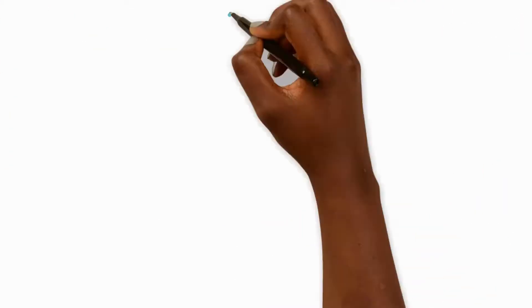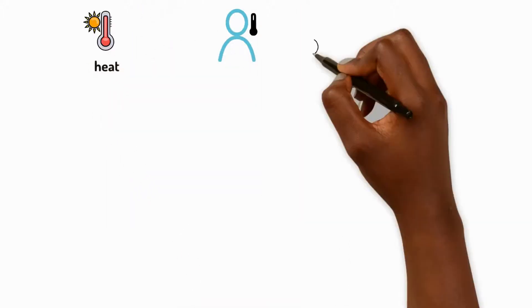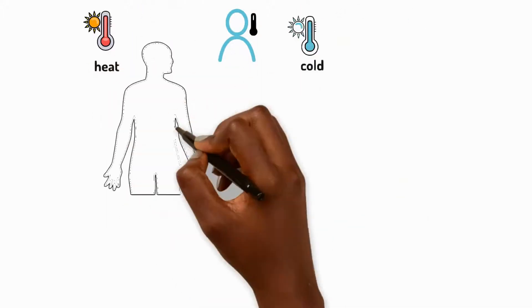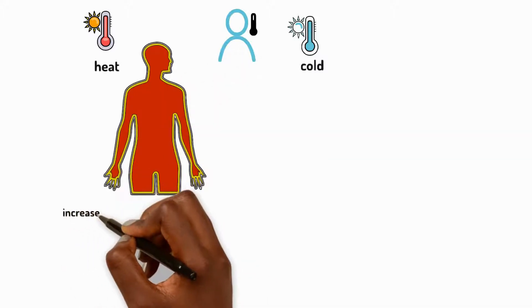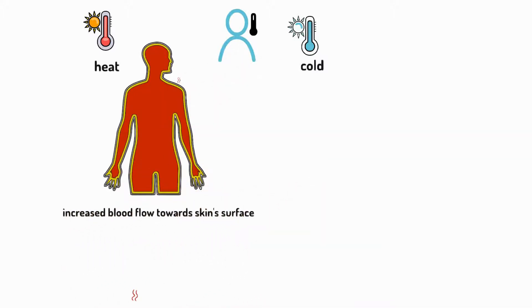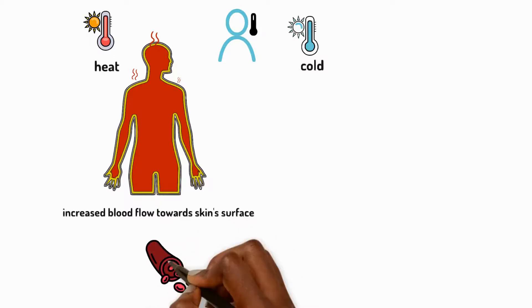Our blood also helps maintain our body temperature, adapting to heat and to cold. When we get too hot, our body sends more blood towards the skin's surface. This outward blood flow allows for the release of excess heat.